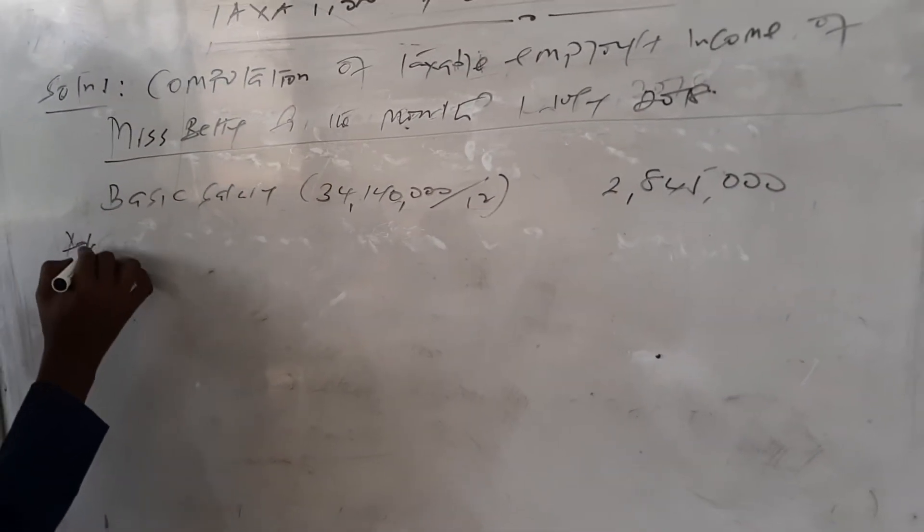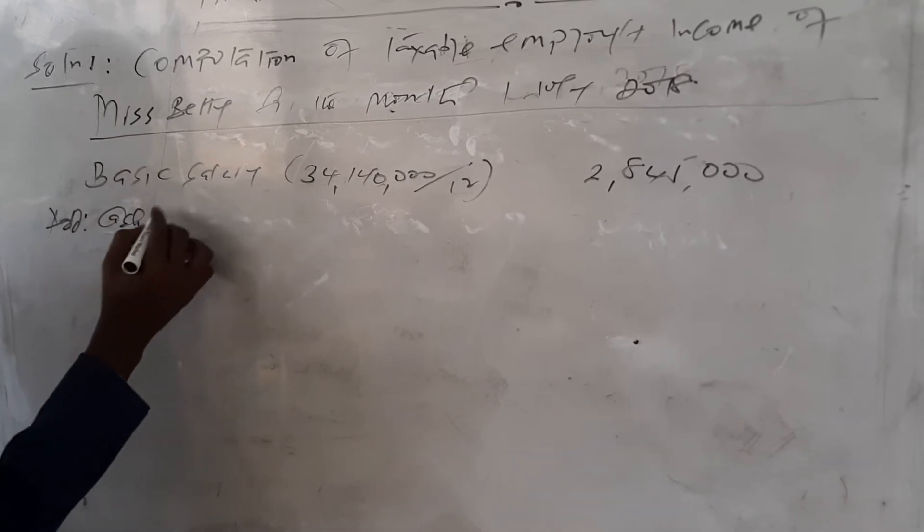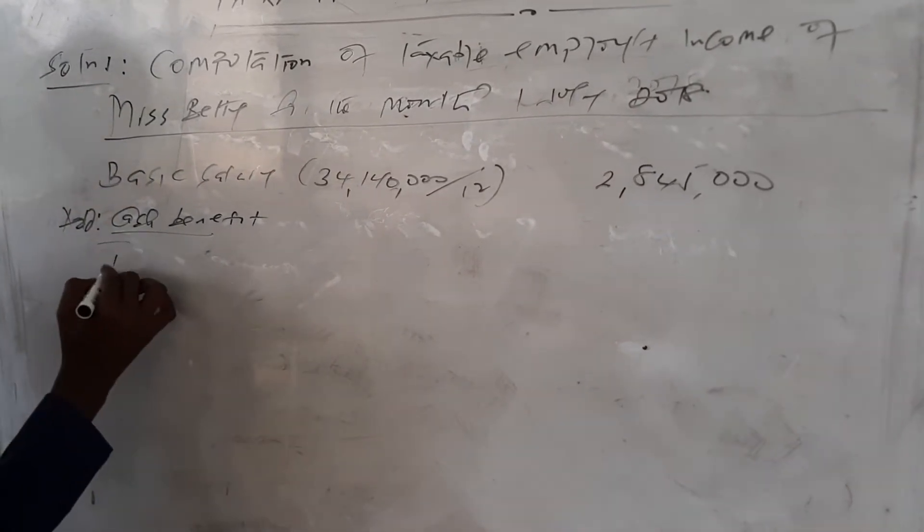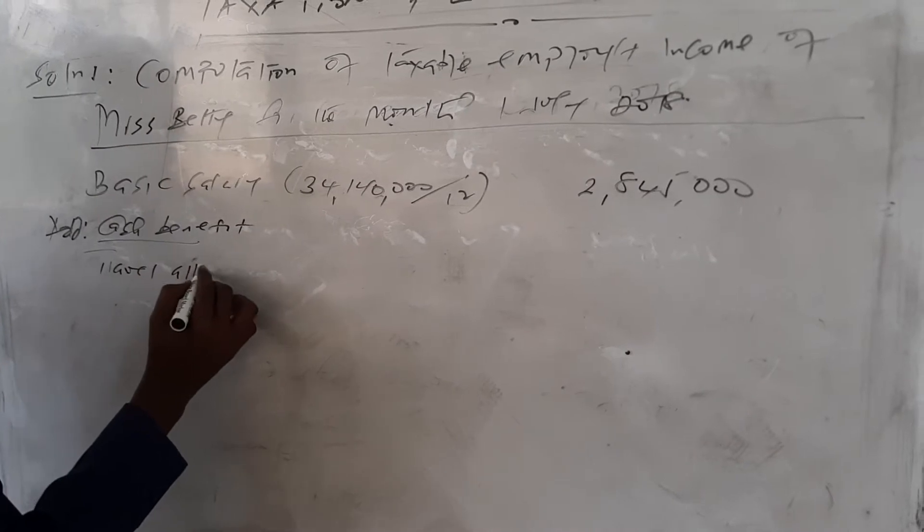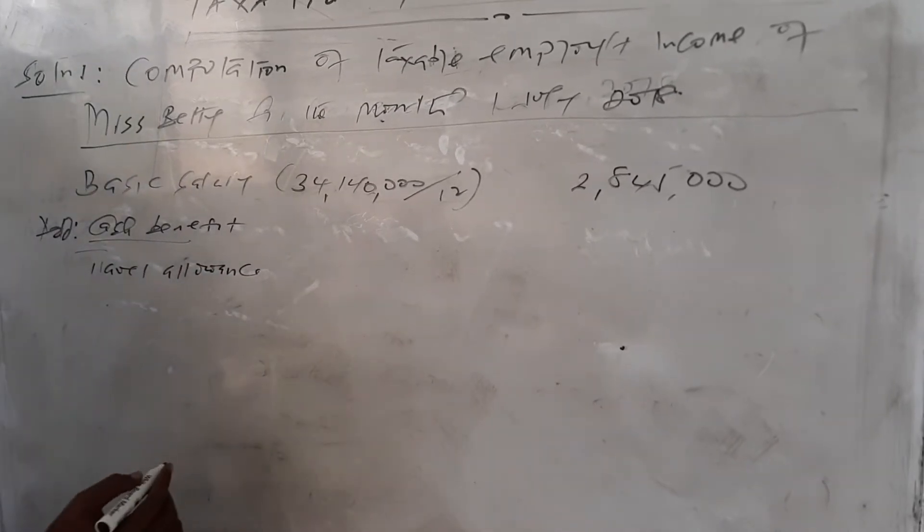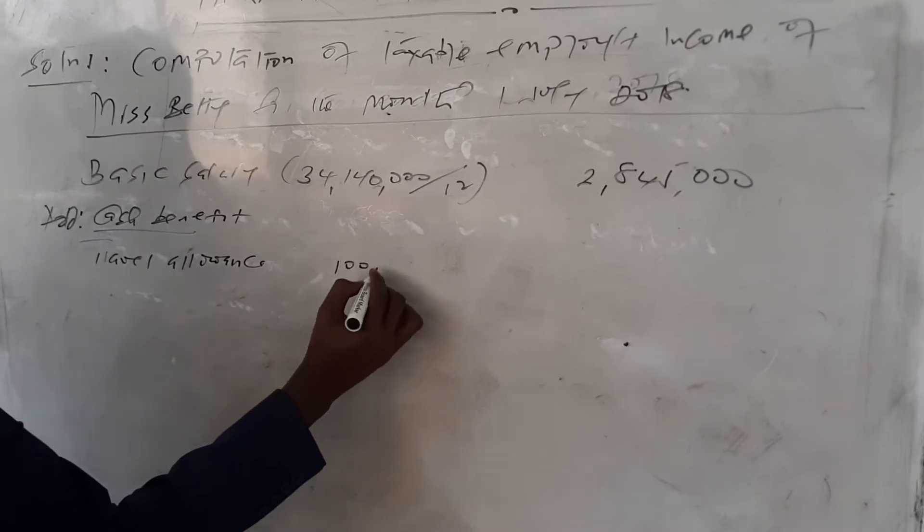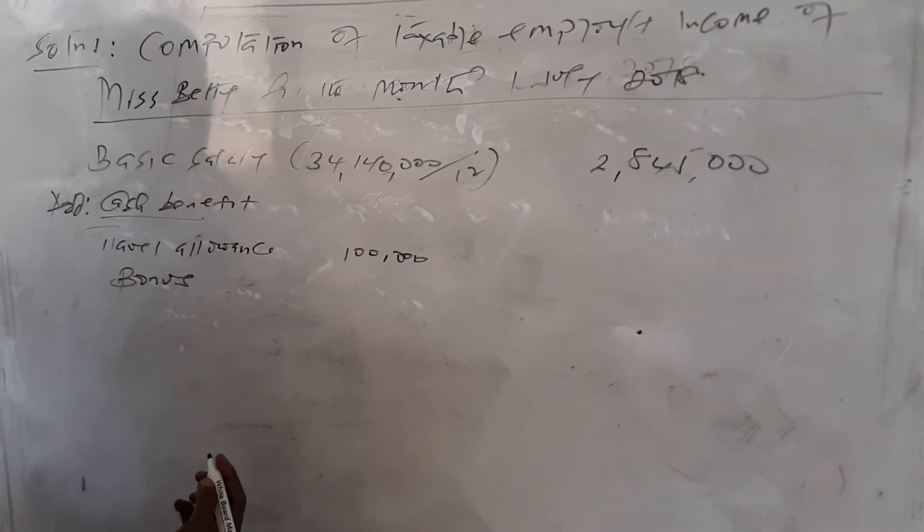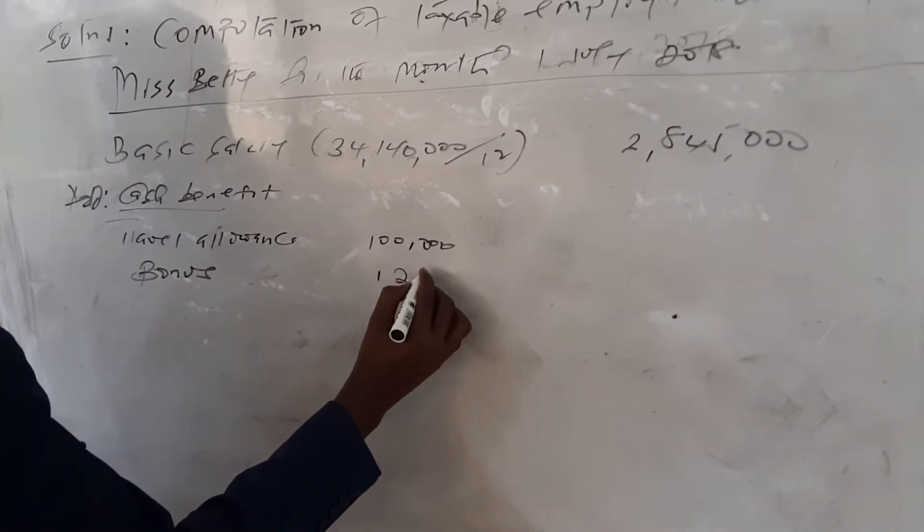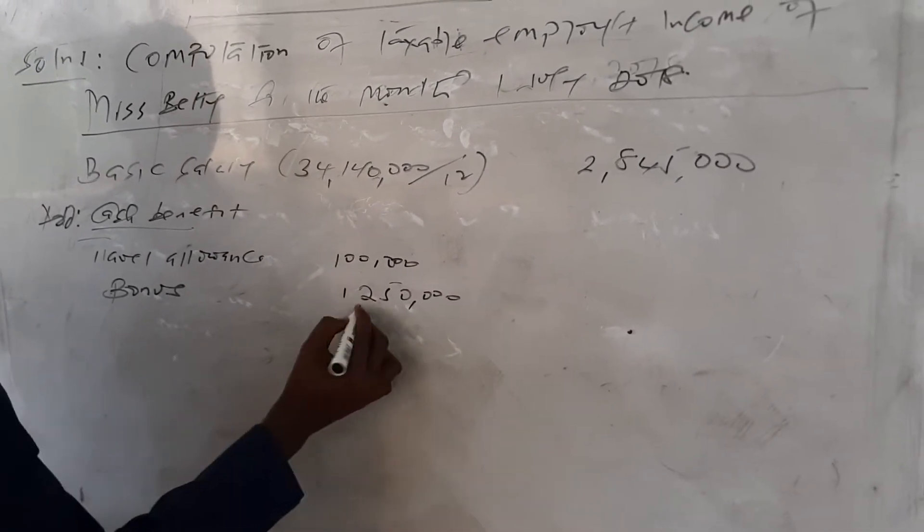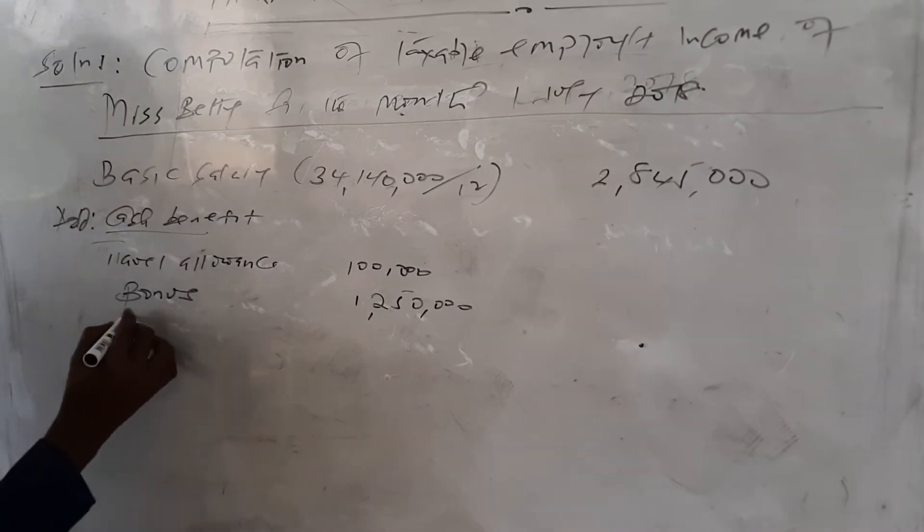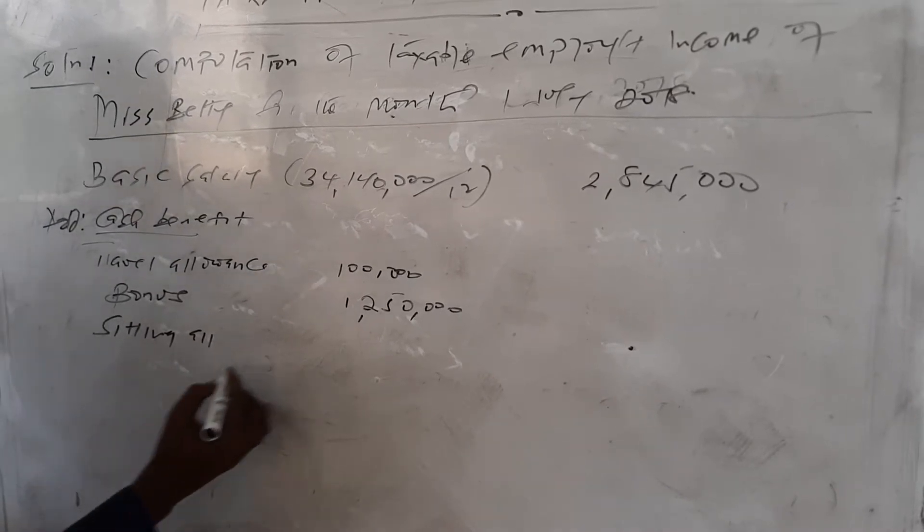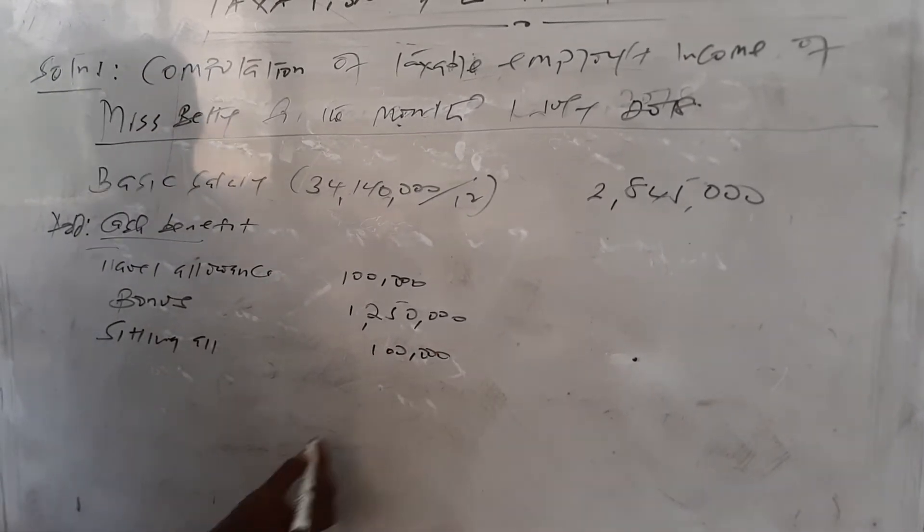We add the cash benefits. The cash benefits include travel allowance, which is 100,000, bonus of 1,250,000, and sitting allowance/receiving allowance of 100,000.